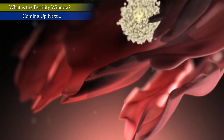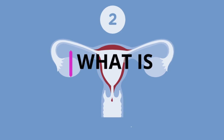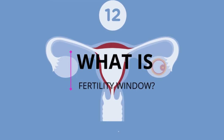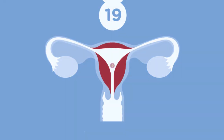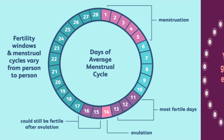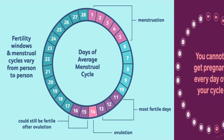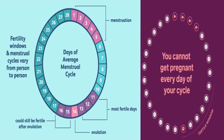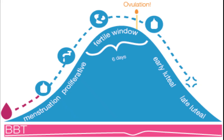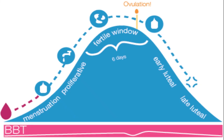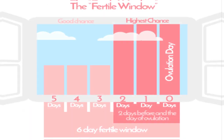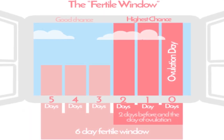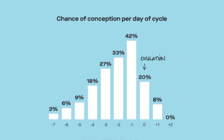What is the fertility window? The fertility window is the peak time frame in the cycle when the chances of conception are the highest. This is two days before and on the day of ovulation. During this time, if intercourse takes place, the chances of getting pregnant are high.